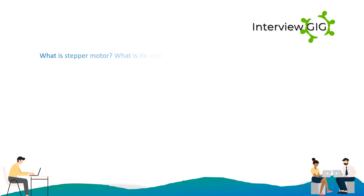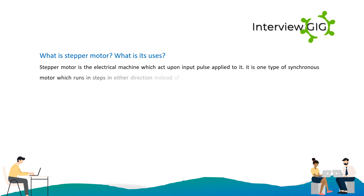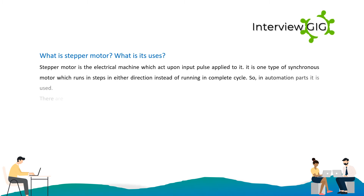What is a stepper motor and what are its uses? A stepper motor is an electrical machine which acts upon input pulses applied to it. It is one type of synchronous motor which runs in steps in either direction instead of running in a complete cycle. Therefore it is used in automation parts.